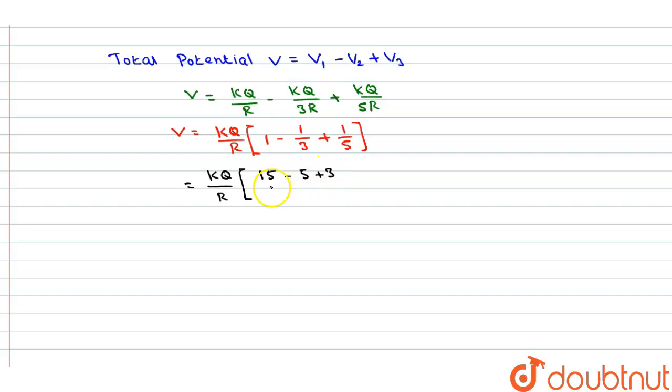So this equals kQ/r times: 15 minus 5 equals 10, 10 plus 3 equals 13, divided by 15. Therefore, the potential at the center equals k times 13Q/15r.